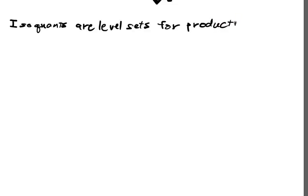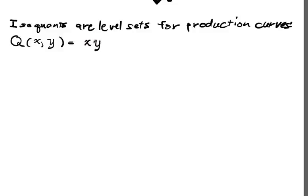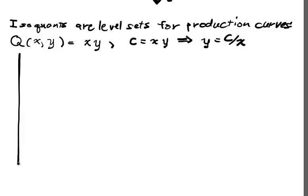In terms of economics, we'll talk about isoquants. Isoquants are level sets for production curves. Suppose you have a production function q(x, y) = x · y, where x is capital and y is labor. If we set c = x · y, then we have y = c / x, and this defines the level set. Note that x is never zero and y is never zero in this situation, so it's nicely defined.